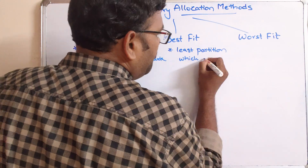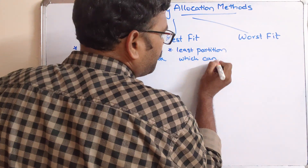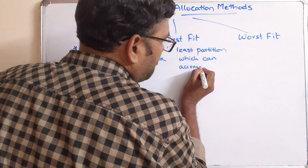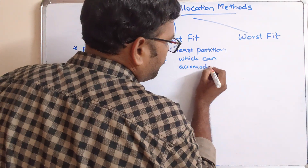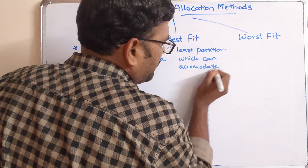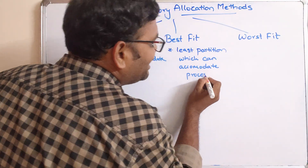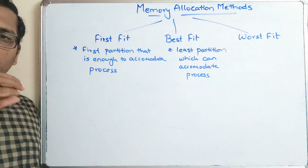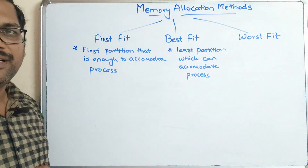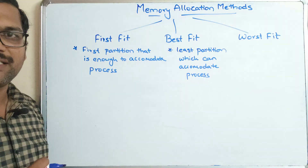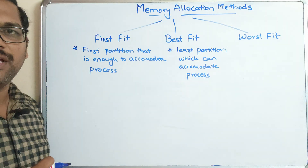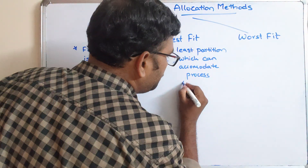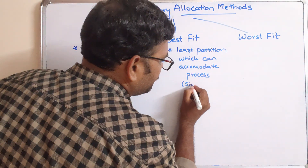For Best Fit, we select the least — meaning the smallest — partition with respect to size that can still accommodate the process.